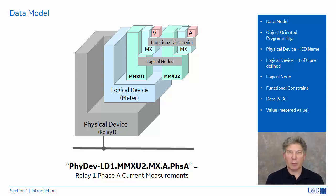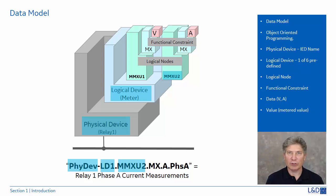If you have an understanding of the data model of IEC 61850, you should recognize the format of object-oriented programming. The physical device is also known as the IED name. The logical device defines the data group type. The logical nodes define the type of information that will be received. The functional constraint groups the logical node into categories — for example, ST for status, DC for description, MX for measurement.